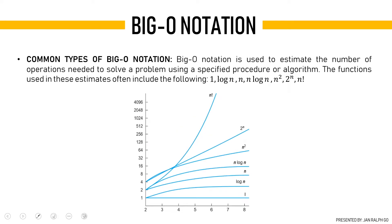There are common types of big O notation. Big O notation is used to estimate the number of operations needed to solve a problem using a specified algorithm. The functions used in these estimates often include: 1, log of n, n, n log of n, n squared, 2 raised to n, and n factorial. Note that the log has a base of 2. The graph shows the time complexity of certain big O notations, giving us a glimpse of which are most efficient. Algorithms with big O of 1, big O of log n, and big O of n are considered efficient, and in reality most algorithms lie in this range.